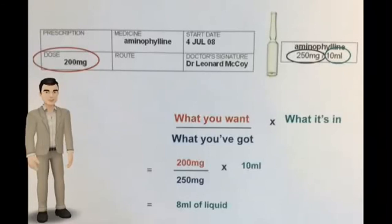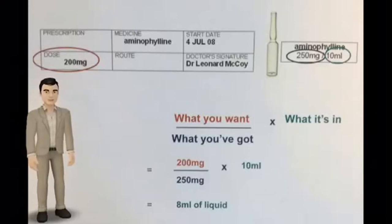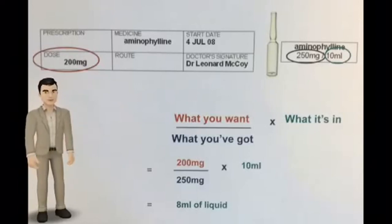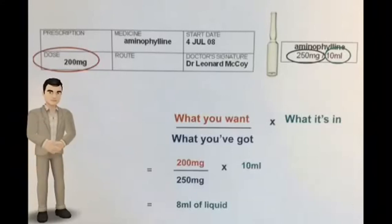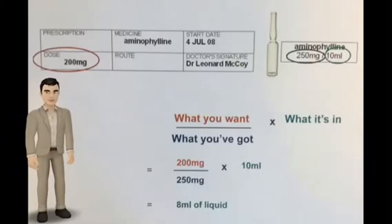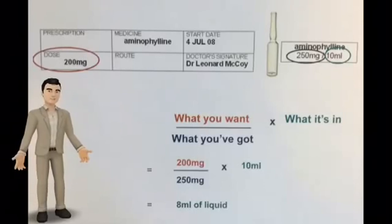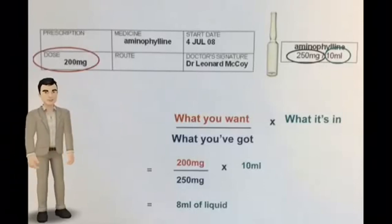Your patient has been ordered 200mg of Aminophylline. Aminophylline is available at 250mg per 10ml. We use the formula: what you want over what you've got, times what it's in. 200mg divided by 250mg, times 10ml, gives you an answer of 8ml of liquid.